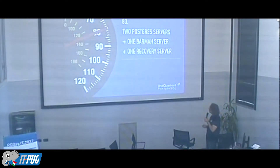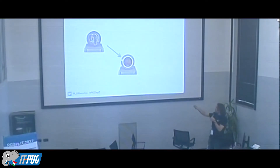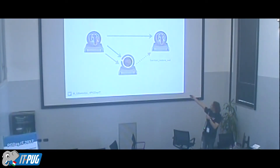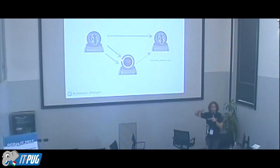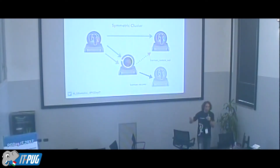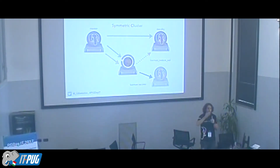We add two PostgreSQL servers. We use Barman to create a standby, link it via streaming replication, and Barman also receives WAL files both via streaming and archiving. We add our recovery server as before and set it up as a symmetric cluster. This is very important: these two servers are identical, and we must not permanently name one 'master' and the other 'standby' — those are temporary roles the servers assume at a point in time.